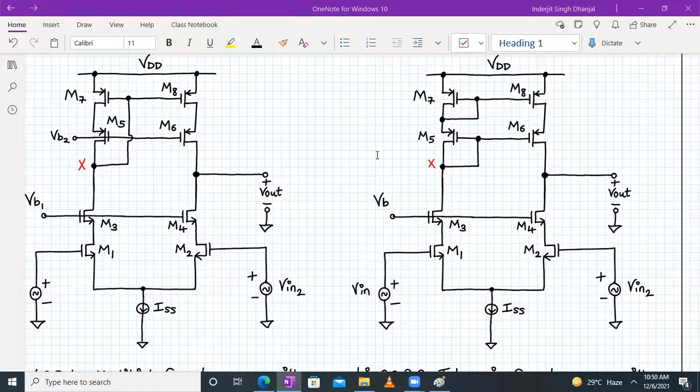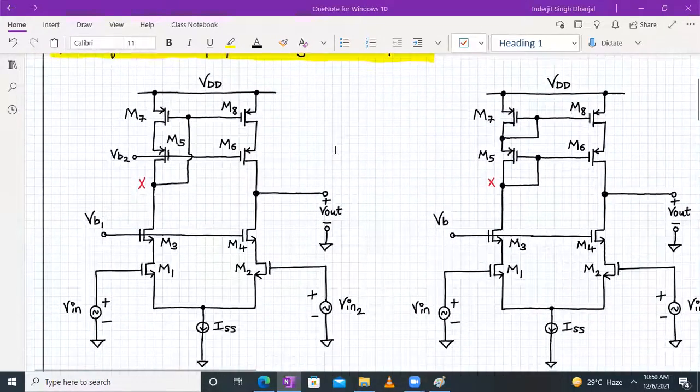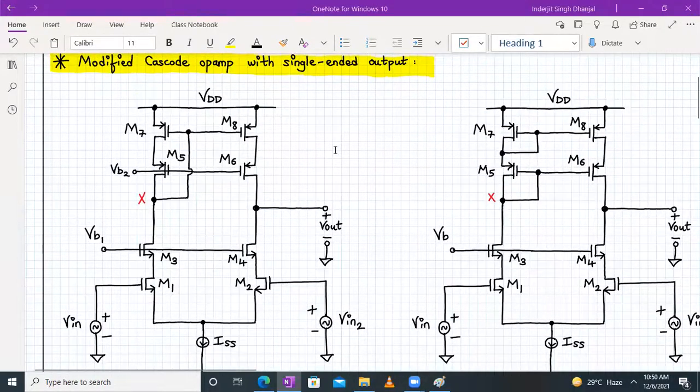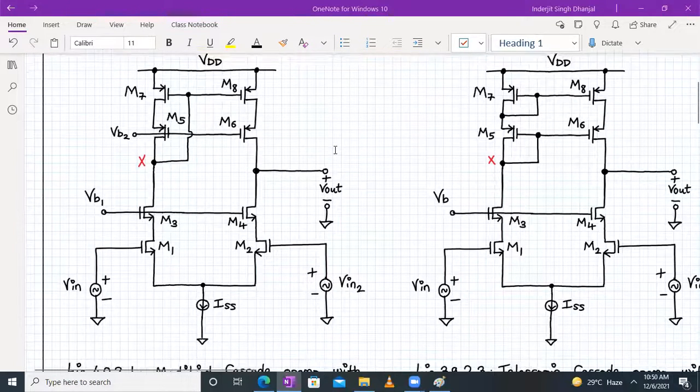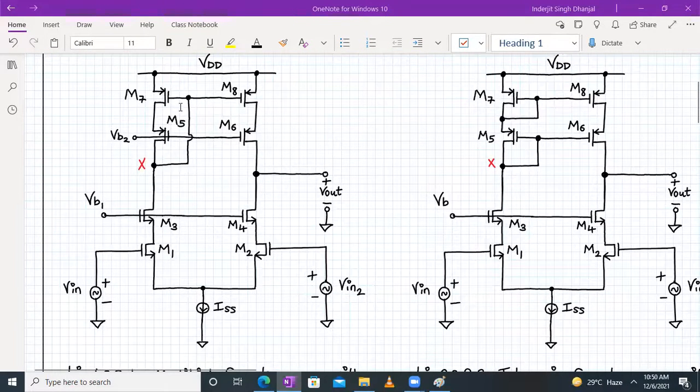This was the configuration. It has very high gain but the limitation was it has reduced voltage swing. In today's lecture we will discuss the modified telescopic cascode op-amp. As you can see clearly here, your M7 gate connection is directly connected to the drain terminal of M5.